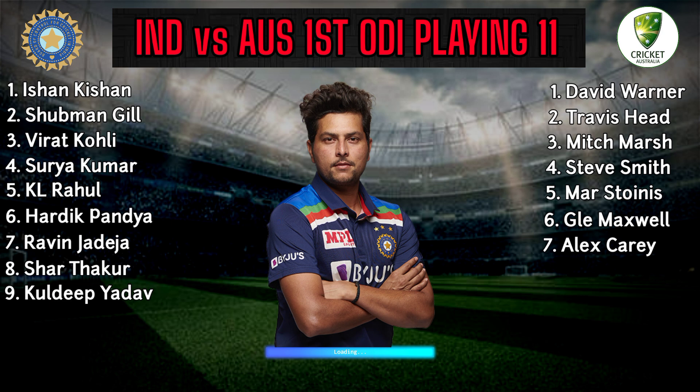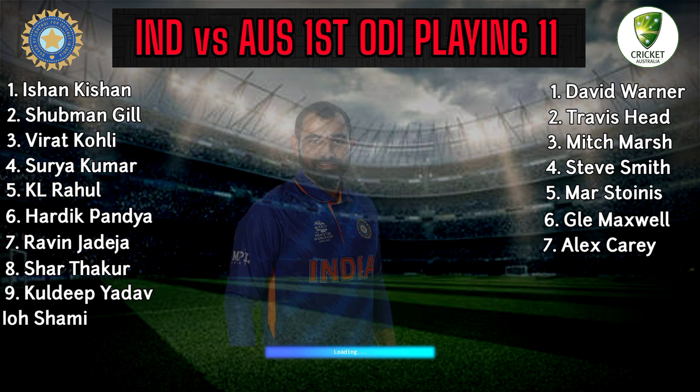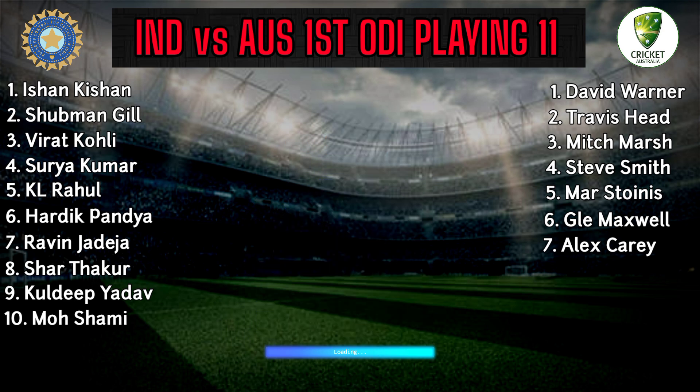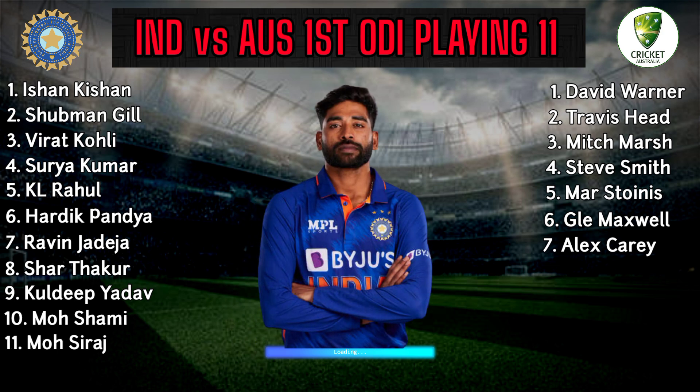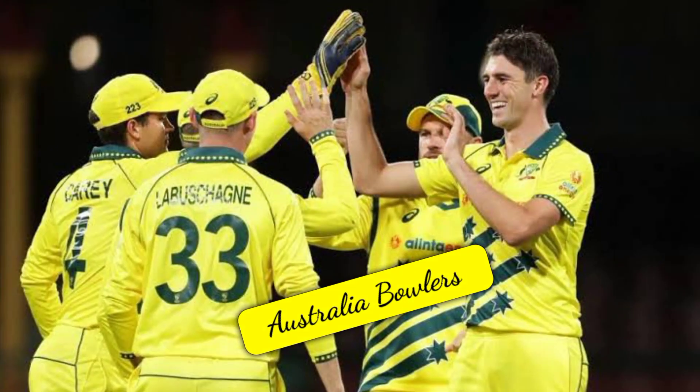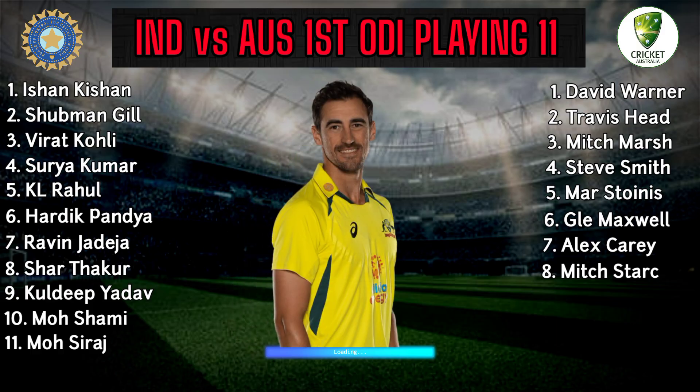India Team Bowlers. Number 8: Shardul Thakur, All-Rounder. Number 9: Kuldeep Yadav, Spin Bowler. Number 10: Mohammed Shami, Fast Bowler. Number 11: Mohammed Siraj, Fast Bowler.